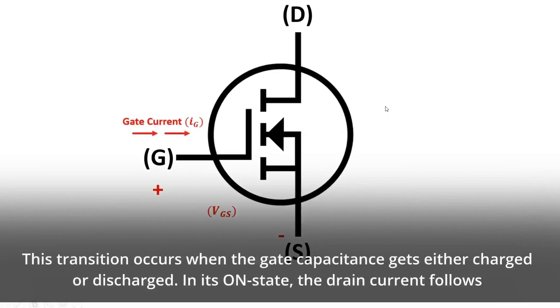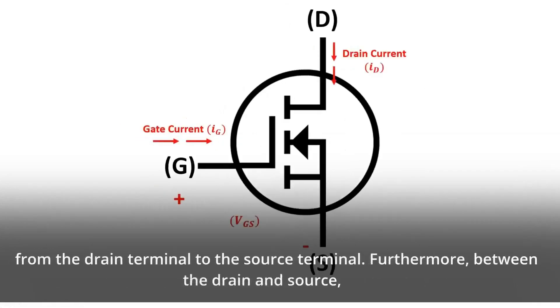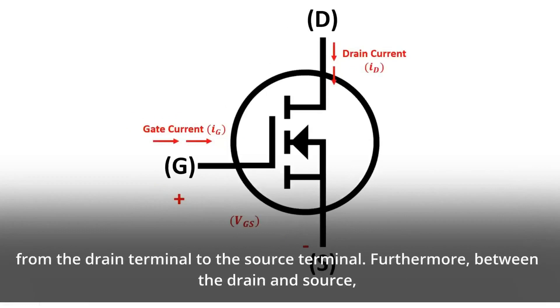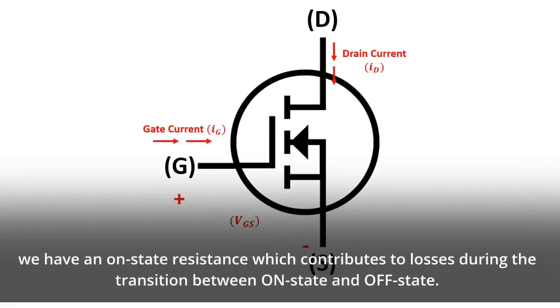This transition occurs when the gate capacitance gets either charged or discharged. In its on-state, the drain current flows from the drain terminal to the source terminal. Furthermore, between the drain and source, we have an on-state resistance which contributes to losses during the transition between on-state and OFF state.